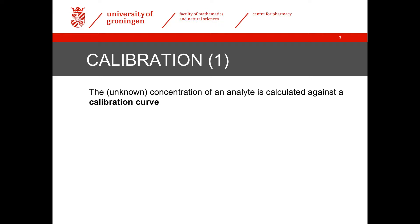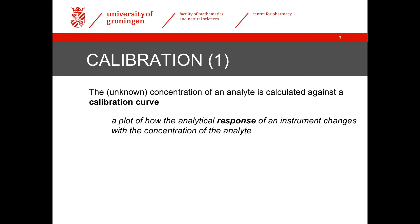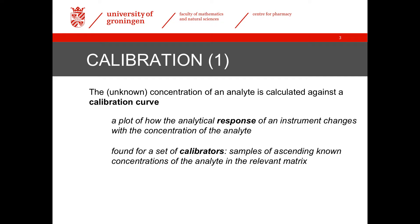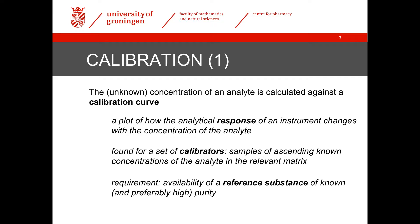The basic principle of calibration is that a set of calibrators with known concentrations is analyzed, and that the unknown concentration in a study sample is calculated by comparing its result to the results of the calibrators. We do this by measuring the response of the instrument for each of the calibrators, which, as was discussed earlier, are samples with known concentrations of the analyte in the relevant matrix. And we need a proper reference substance to make the calibrators.